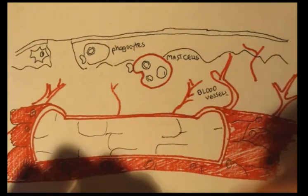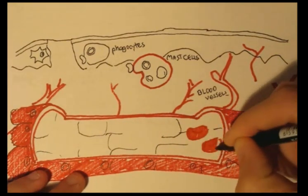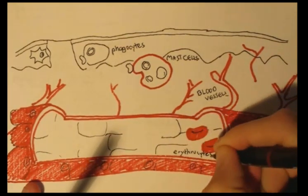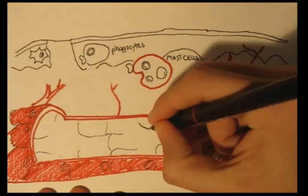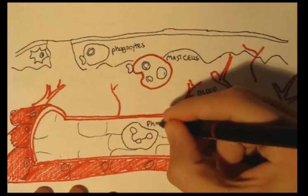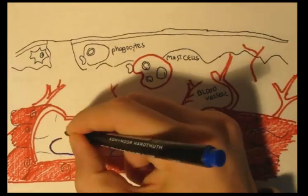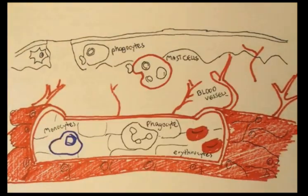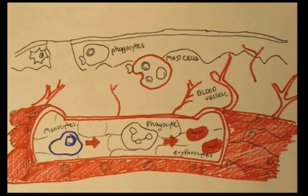Inside the blood vessels you can find red blood cells, or erythrocytes, and leukocytes — white blood cells — such as vascular phagocytes, which differ from the tissue phagocytes, and monocytes. Also circulating in the vessels are various proteins, such as inflammatory mediators.